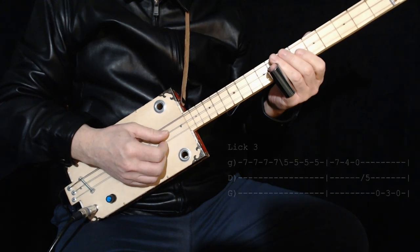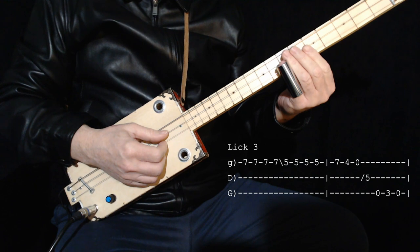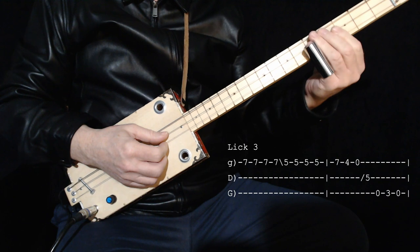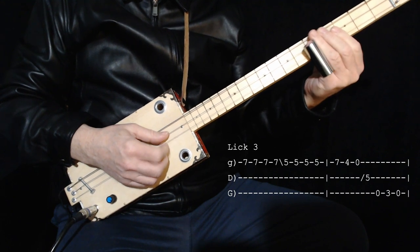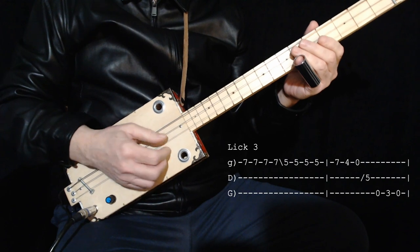And then we come to the most complicated lick in the song. It goes over two measures. Starts up on seven on the high string. And you play that four times. And then you play four fives. There's a little rhythm to that. You still have that shuffle rhythm in there.